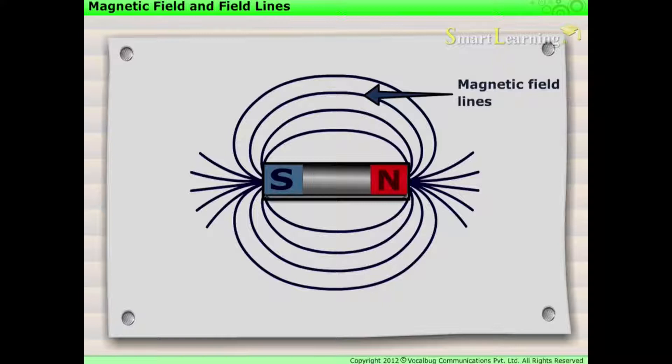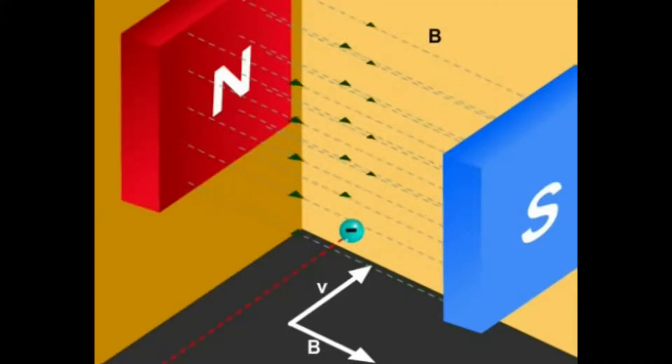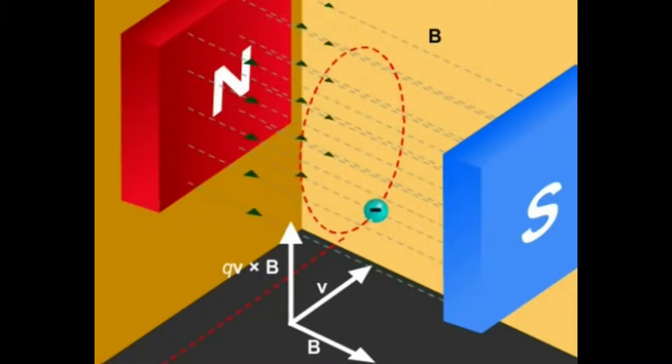Before we begin this video I want to remind you of something extremely significant. Magnetic field and magnetic force are not the same thing. The magnetic field tells you the direction that a compass needle points. The magnetic force tells you the direction that a moving charged object gets pushed. You need the magnetic field to find the magnetic force, but the two are not the same thing.